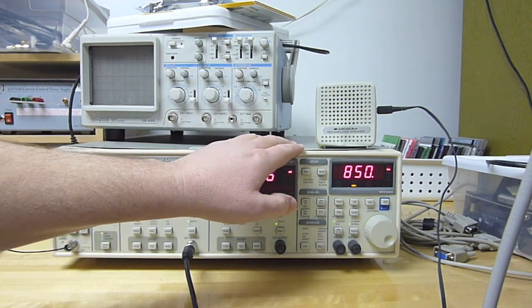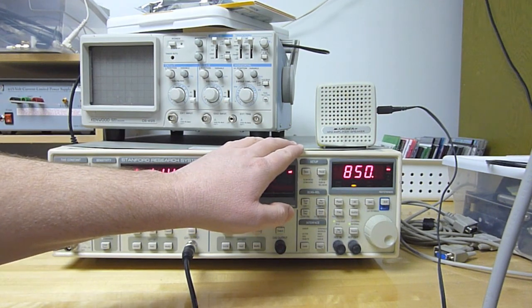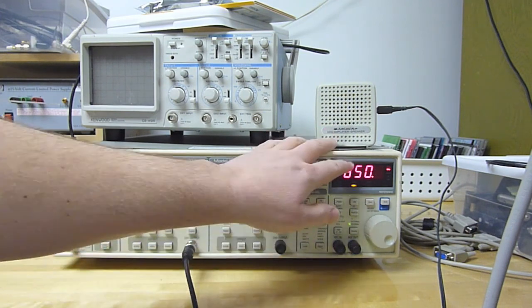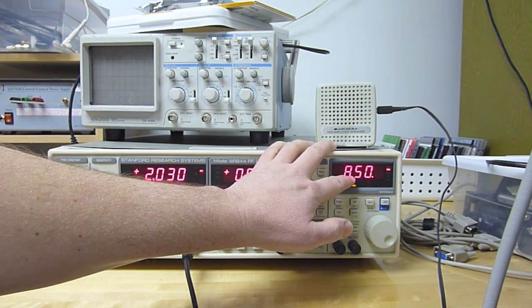So the speaker is giving us the mixed down version of the RF coming in on the piece of wire and the 850 kilohertz local oscillator.